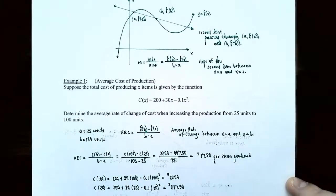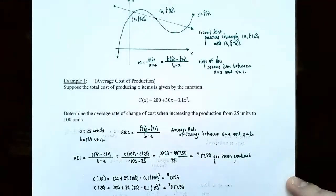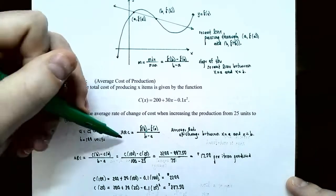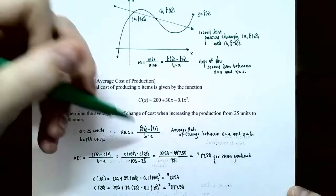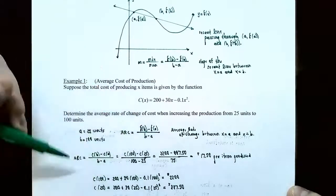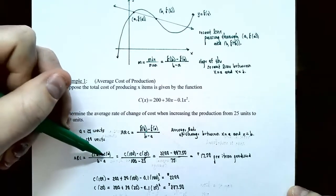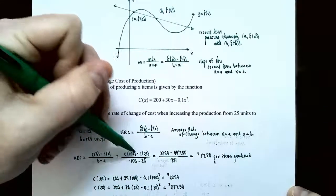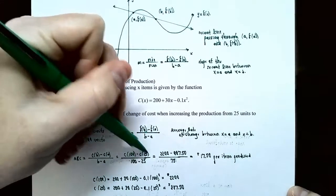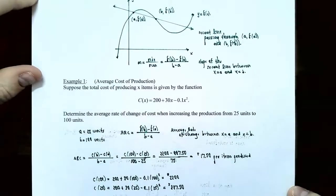Here a equals 25 units (the starting production level) and b equals 100 units (the ending production level). We need to find the y values to calculate the average rate of change — the average cost of production. Using the formula: c of b subtract c of a divided by b minus a, that's the cost at 100 units subtract the cost at 25 units, divided by 100 subtract 25.